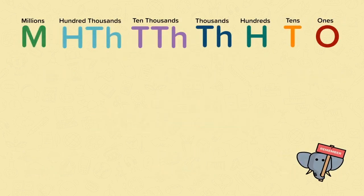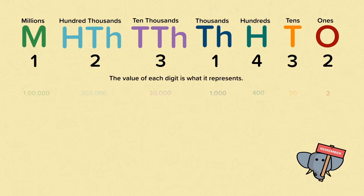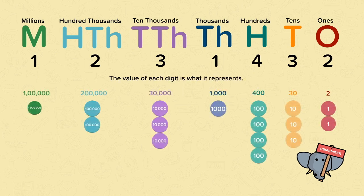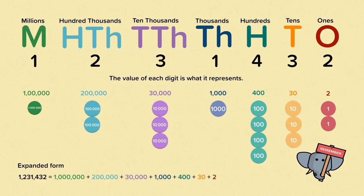So remember, make sure you understand each place up to a million. The value of each digit is what it represents. The expanded form shows the value of each digit in a number.